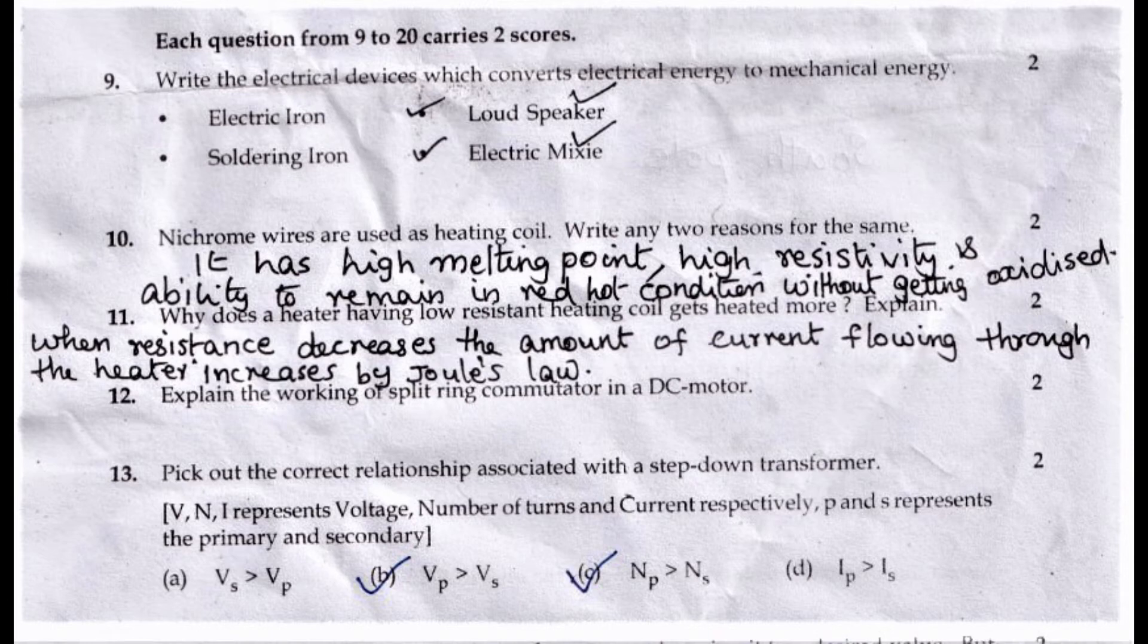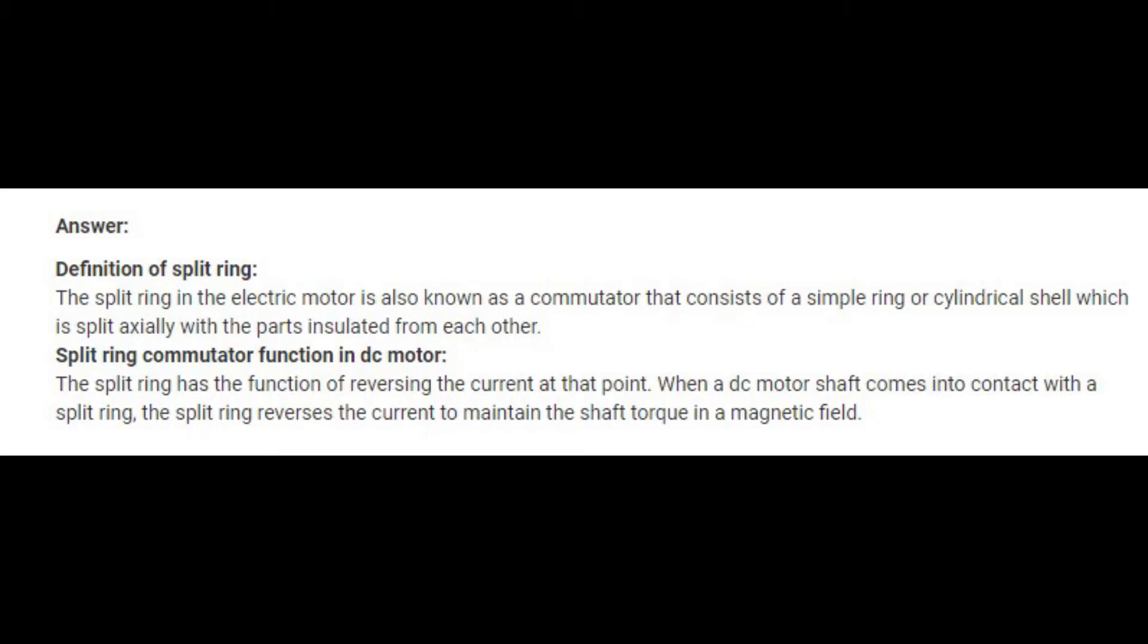Twelfth question: Explain the working of split ring commutator in a DC motor. Answer: The split ring in the electric motor is also known as a commutator that consists of a simple ring or cylindrical shell which is split, with the parts insulated from each other.